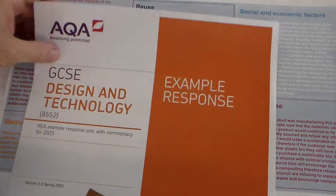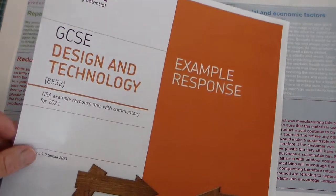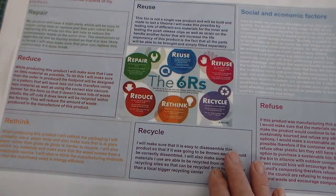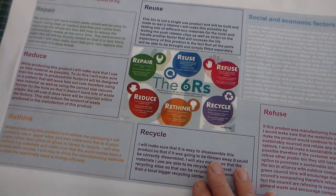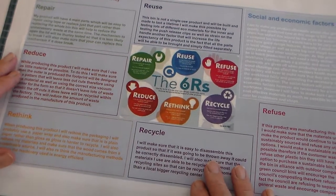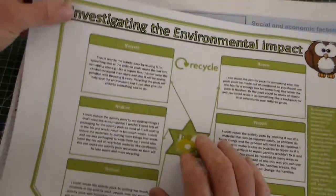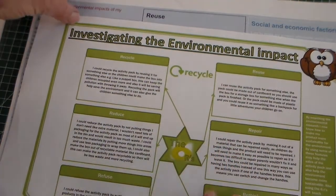Hello and welcome to Mr. Ridley's Design and Technology. We're looking at another GCSE course worksheet for the NEA. This is from the exam board's example response, primarily for AQA, but fairly similar across the board for GCSE Design and Technology. On this sheet, we're looking at sheet 5, which we're calling investigating the environmental impact.